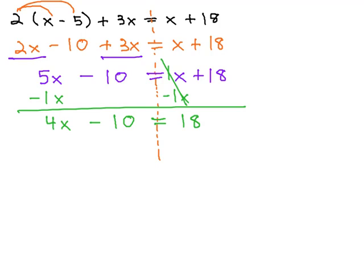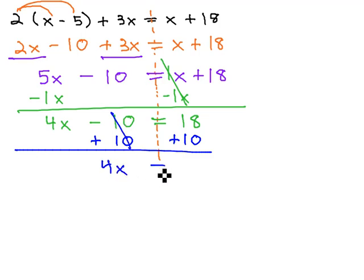And now we have a simple two-step equation, which we know how to solve. Start by adding 10 to both sides, giving us 4x equals 28.